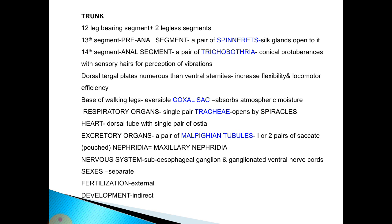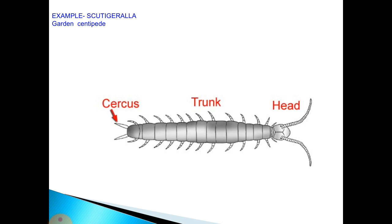The excretory organs include a pair of Malpighian tubules and one or two pairs of saccate nephridia known as maxillary nephridia. The nervous system includes a subesophageal ganglion and a ganglionated ventral nerve cord. The sexes are separate; fertilization is external, and development is indirect. An example is Scutigerella, the garden centipede.